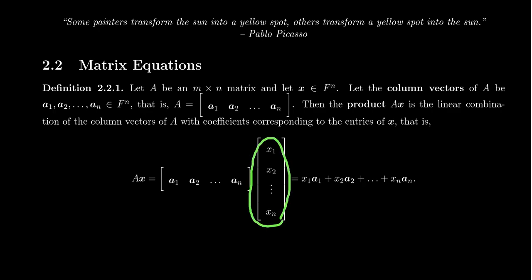And then the vector X, since it's in F^N, there will be N numbers in that vector: X1, X2, up to XN.